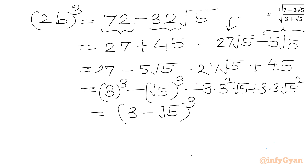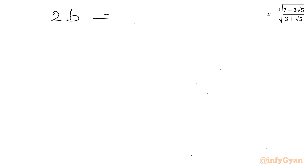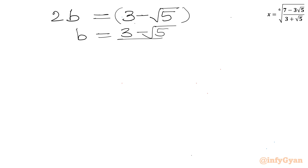Using the identity (a−b)³ = a³ − 3a²b + 3ab² − b³. The left side is (2b)³ and the right side is (3 − √5)³. Taking the cube root of both sides: 2b equals 3 minus √5. So b equals (3 minus √5) over 2.